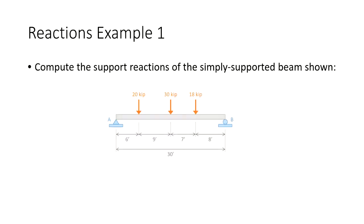I have here a simply supported beam — by 'simply supported' I mean a beam that has a pinned boundary condition on one side and a roller on the other. On this beam I have three concentrated forces: a 20-kip load, a 30-kip load, and an 18-kip load, and what we're going to do is compute the support reactions at A and B.